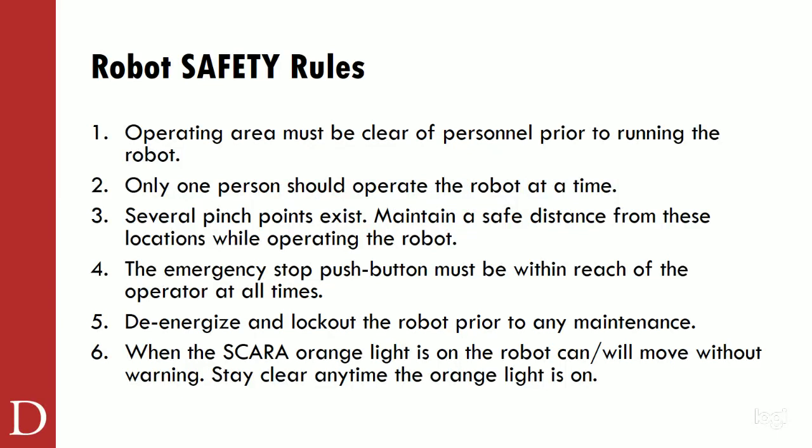A little bit on the robot safety rules — I always like to start with robot safety rules. Remember, if we're running a robot in the real world, keep the operating area clear of personnel. Only one person should use the robot at a time. Remember the pinch points that exist on a robot and maintain a safe distance. Always keep the emergency stop within reach of the operator. De-energize and lock out the robot prior to any maintenance. And when that orange light is on, remember that robot can and will move without warning. So stay clear.